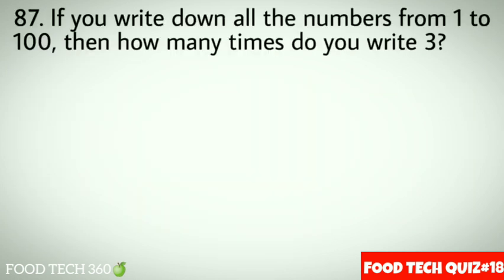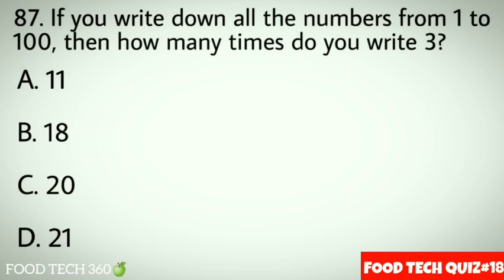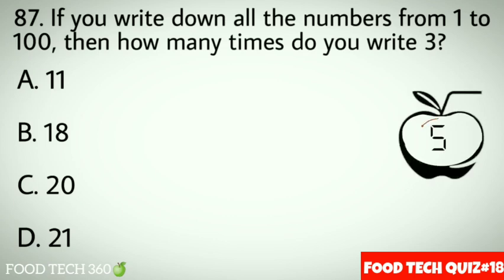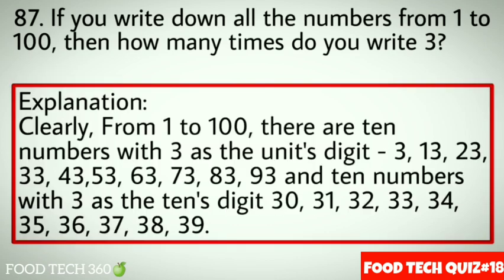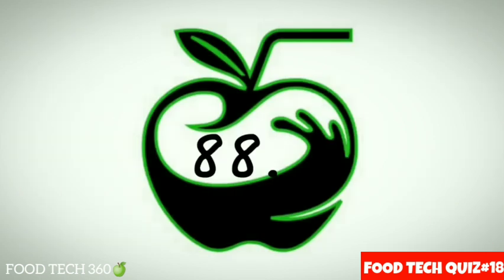Question 87: If you write down all the numbers from 1 to 100, then how many times do you write 3? Options: A. 11, B. 18, C. 20, D. 21. Correct answer: C. 20. Explanation: From 1 to 100 there are 10 numbers with 3 as the units digit — 3, 13, 23, 33, 43, 53, 63, 73, 83, 93 — and 10 numbers with 3 as the tens digit — 30, 31, 32, 33, 34, 35, 36, 37, 38, 39. Total = 20.